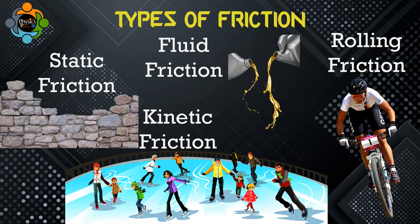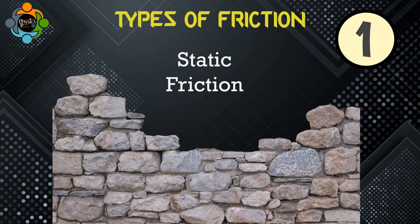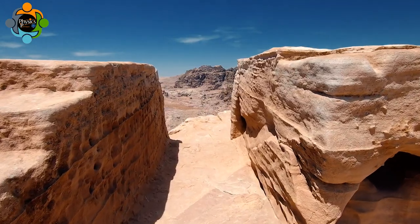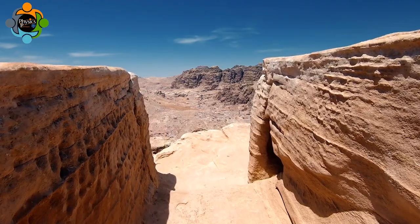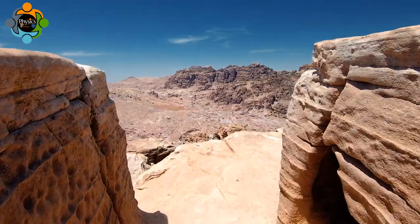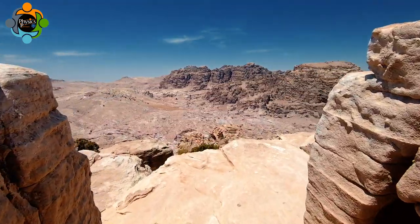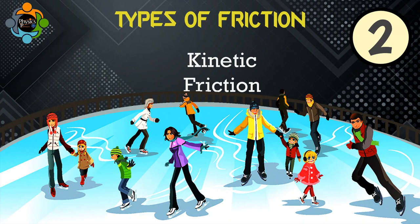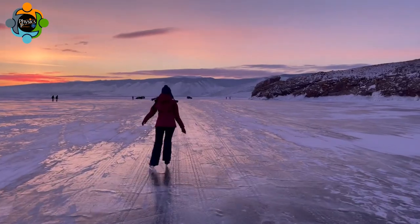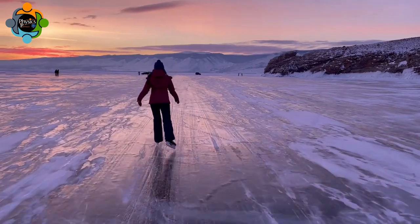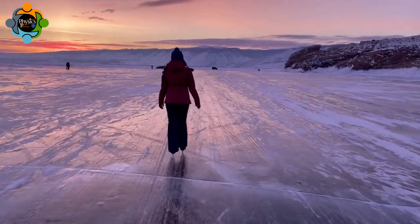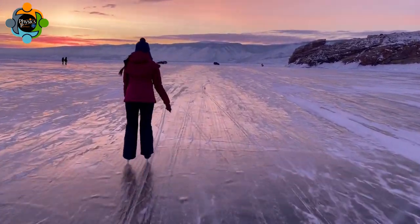Let's talk about the types of force of friction. Number one: static friction. This is the force that resists the movement between two surfaces that are at rest and not moving in relation to each other. Number two: kinetic friction. As the name suggests, this force opposes the relative motion between surfaces that are moving in relation to each other.